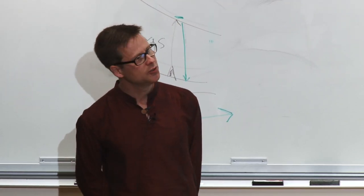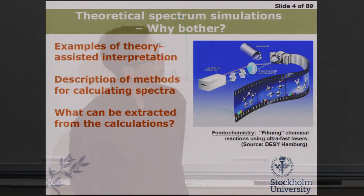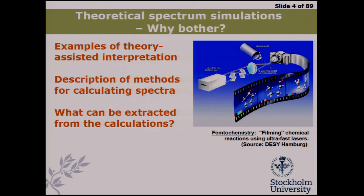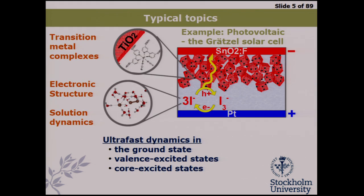I try to present this through a series of examples. I will also describe, on a rather shallow level, the types of techniques — practically, what do we calculate, and how do we make this link to the experiments? For each different case, what kind of information can we extract, and what are the limitations? Apart from time-resolved experiments, I also have a long-time collaboration in energy-related applications, particularly in solar cells, which I use as an example base.